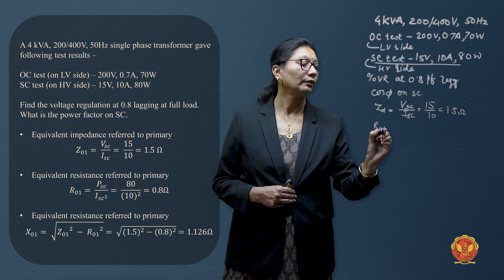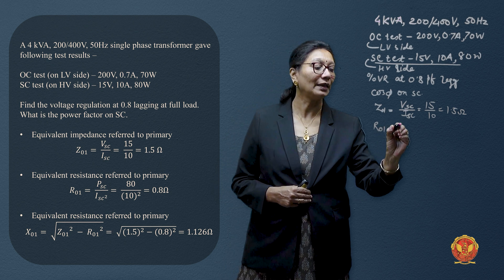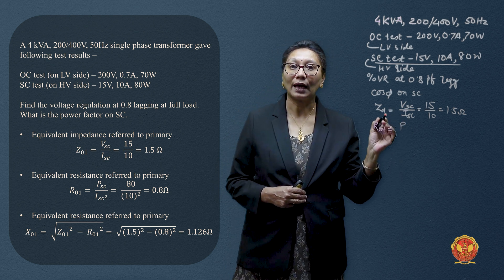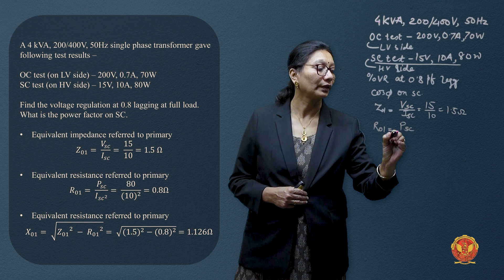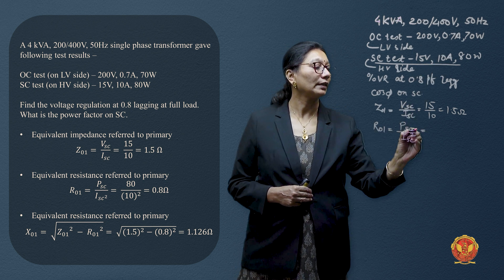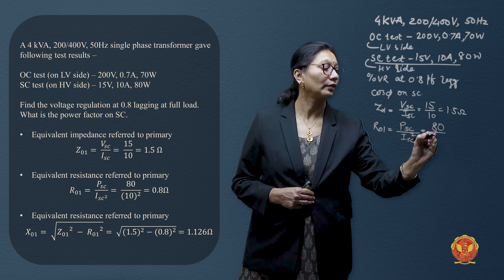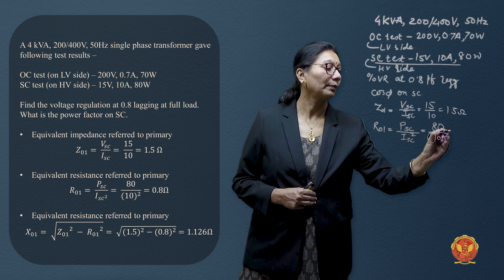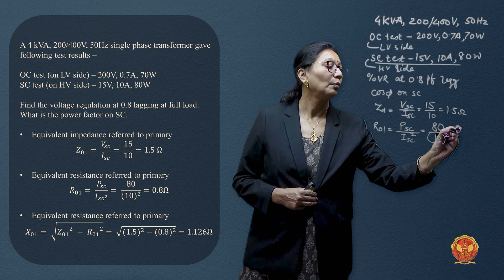Then equivalent resistance referred to primary R will be given by P is equal to I squared R. So we are having short circuit power I_SC also. Here they are given as 80 divided by 10 square. So here also we have obtained this resistance as 0.8 ohm.